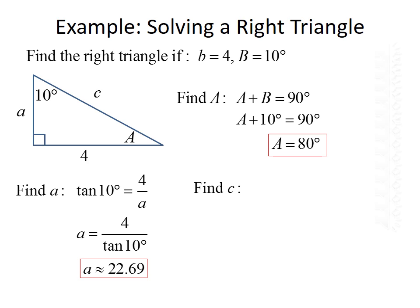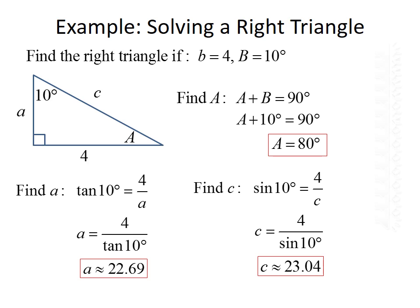Next, we want to find side C. Again using the given information — angle 10 degrees and opposite side 4 — and since side C is the hypotenuse, we use the trig function that deals with opposite and hypotenuse, which is sine. So sine of 10 degrees equals 4 over C, giving us C equals 4 divided by the sine of 10 degrees, which is approximately 23.04 units. Note that once we found side a, we could have alternatively used the Pythagorean theorem with sides a and B to solve for C.